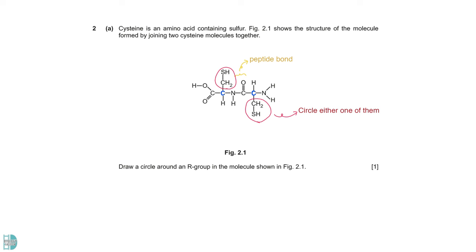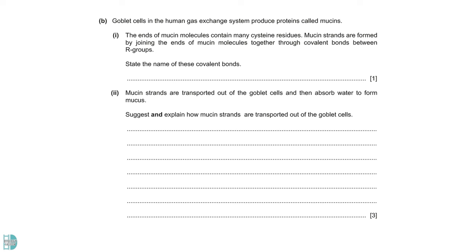B talks about goblet cells and mucins. One tells us that there are many cysteine residues in the mucin molecules. You have to state the name of the covalent bonds joining these molecules. Cysteine has an R group with sulfur. They can form disulfide bridges or bonds with each other.